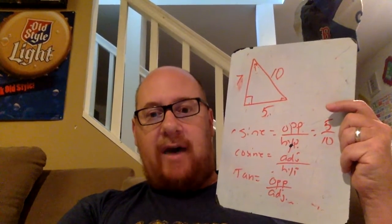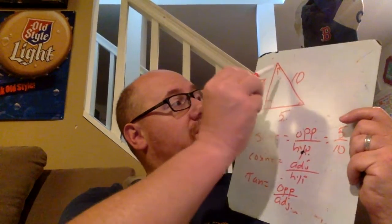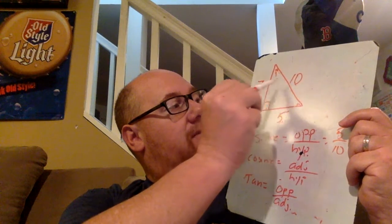The cosine of that would be adjacent over hypotenuse. So adjacent would be 7 over 10.